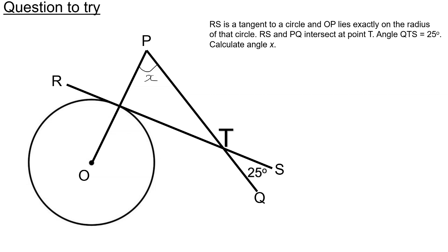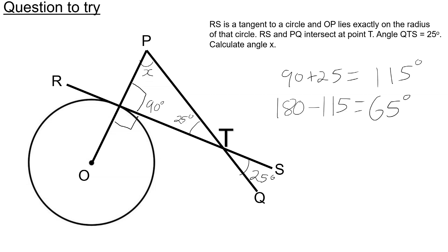Here's the answer. We should end up with X being 65 degrees, because we have vertically opposite angles — so if this angle here is 25, then this angle is 25. Tangent meets radius at 90 degrees, so this angle here is 90, which means the angle here must also be 90, because angles on a straight line add up to 180. The angles in this triangle are 90 and 25, so to find X, I do 90 plus 25, then subtract from 180, and I get X equals 65 degrees.